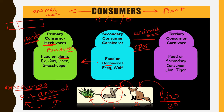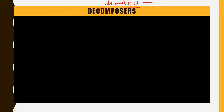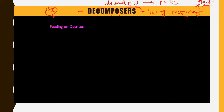In a food chain, producers are always at the first trophic level, consumers at the second, third, and last levels, and decomposers are present at all trophic levels. Decomposers are organisms that help in the decaying of dead organic matter from producers or consumers. Their basic job is to convert dead organic matter into inorganic form or nutrients, which can later be consumed by plants to perform photosynthesis. Decomposers use two methods: feeding on detritus, or converting detritus into smaller parts using digestive enzymes.